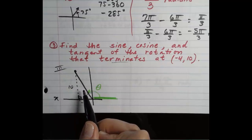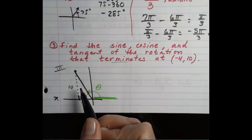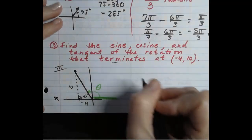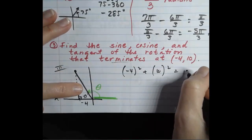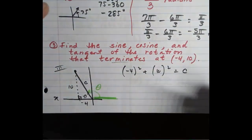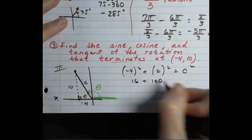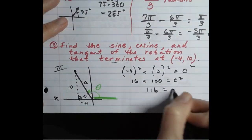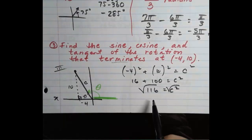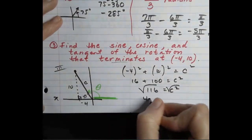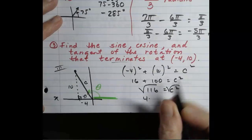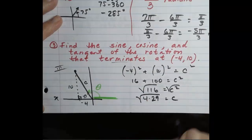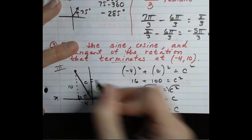Obviously, if this side is negative 4 and this side is 10, the hypotenuse is not 1. We find it using the Pythagorean theorem: negative 4 squared plus 10 squared equals c squared. That's 16 plus 100 equals c squared, so 116 equals c squared. Since 116 is 4 times 29, when we simplify the radical we get 2 root 29 for our hypotenuse.